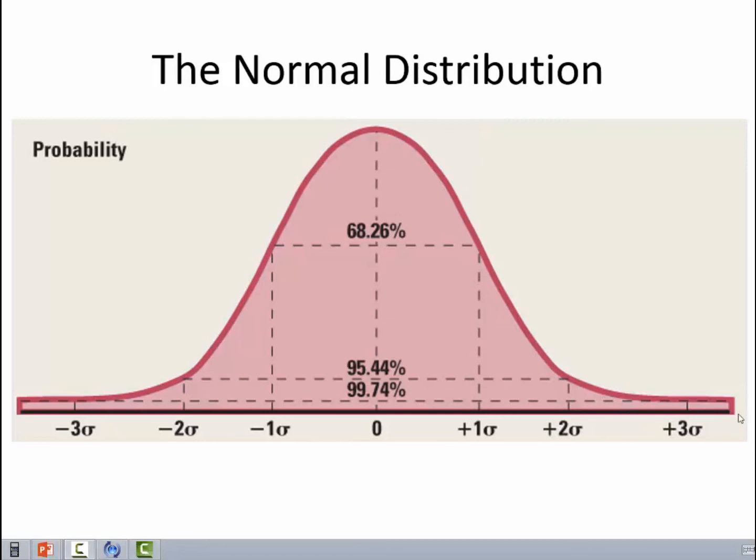We can go about finding that in a couple of ways. Number 1, we can note that plus or minus 1 standard deviation is 68.26%, and that everything outside of that, therefore, would be 31.74%. That's going to include both of these tails.